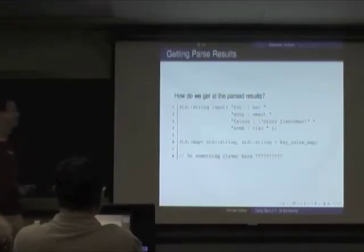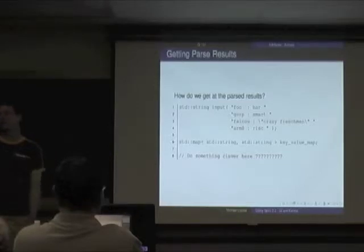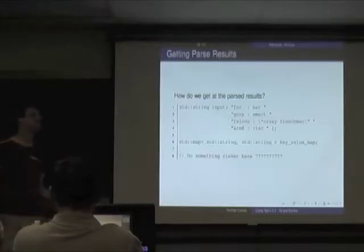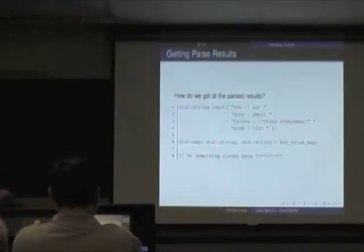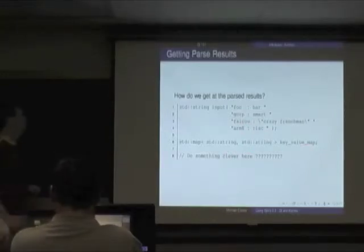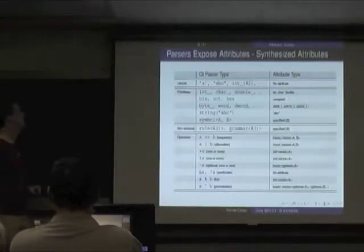So far we can parse things but end up with nothing useful — we want information out so we can use it. The whole idea of the AST: we'd like to stick results inside a map of string to string. Parsers expose an attribute — at the end of a parse they expose something. Integers expose integers, doubles expose doubles.